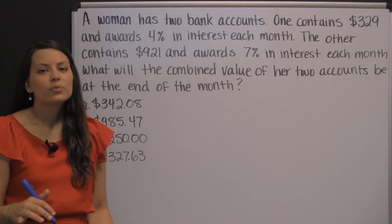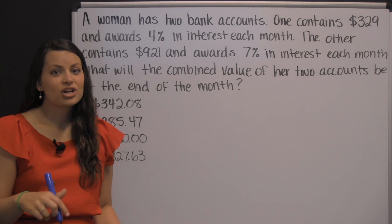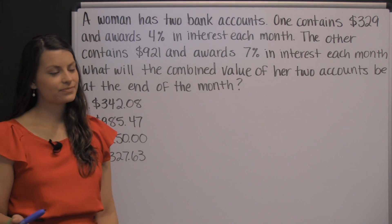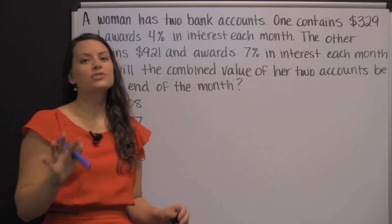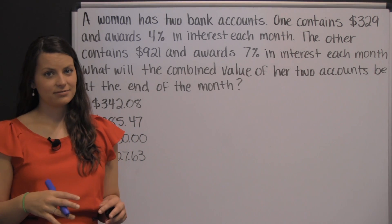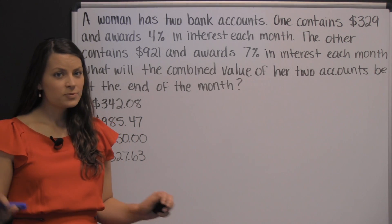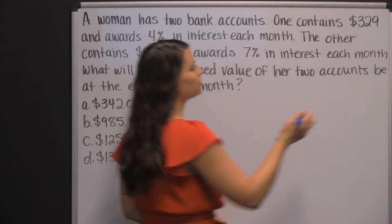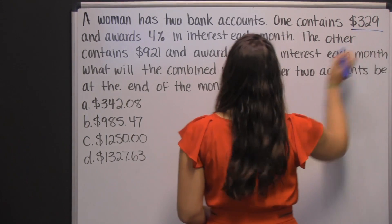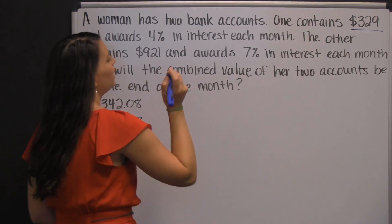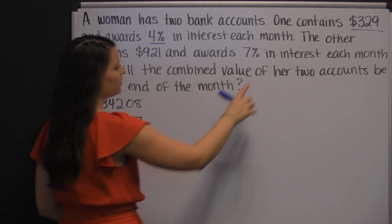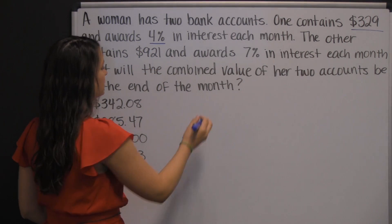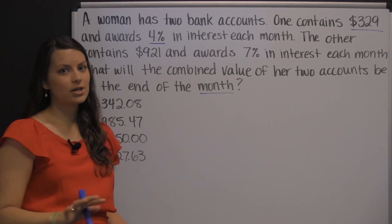It's not really hard, it's just that there are a lot of steps and you don't get to use a calculator. So here's what I'd say: focus in. Don't get overwhelmed by all the different things you have to do — start somewhere. Start with the first account. She has $329 in it and she earns 4% interest for that month. We only have to find how much she has at the end of the month, so just one month.